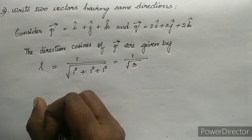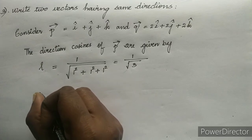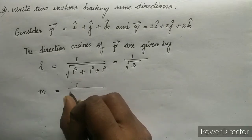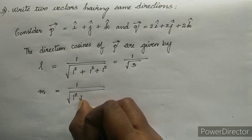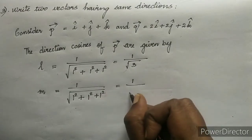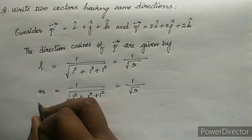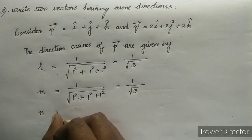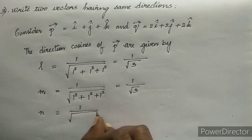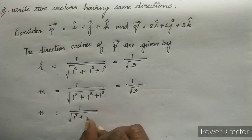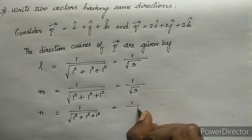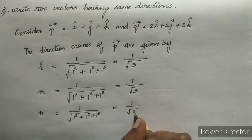Similarly, M = 1/√(1² + 1² + 1²) = 1/√3, and N = 1/√(1² + 1² + 1²) = 1/√3. So the direction cosines of P vector are all 1/√3.